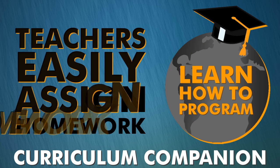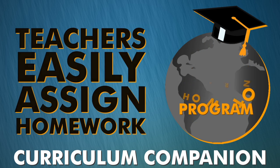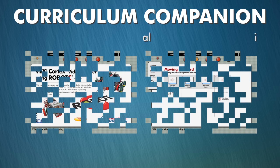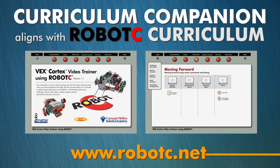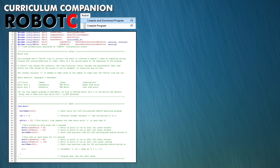Every student can learn to program, and teachers can easily assign homework. The Curriculum Companion is designed to align with the existing Robot C curriculum, which is available at the Robot C website. Students begin by downloading their Robot C code to the Virtual World interface.